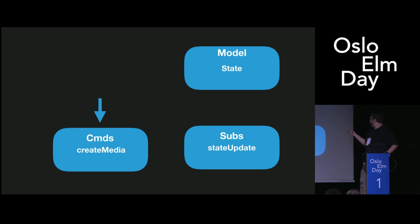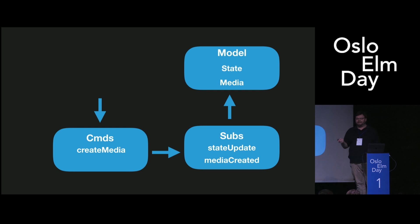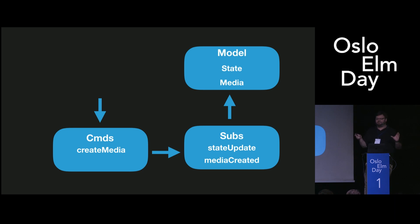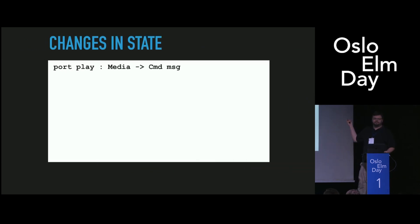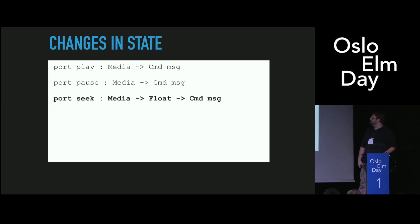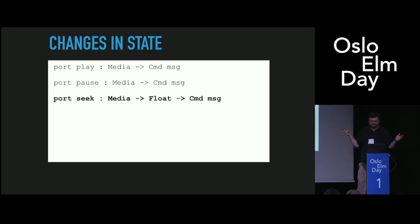So what we have now is a command to create media. That command then sends the media through a subscription into our model. And now we have a reference to the actual media object itself in our model. We're not going to call it an object — it's Elm. But we have a direct reference that we can send through a port, and we can play, we can pause, we can seek current time. We can do anything else we need to do. This is so much easier than querying the DOM.